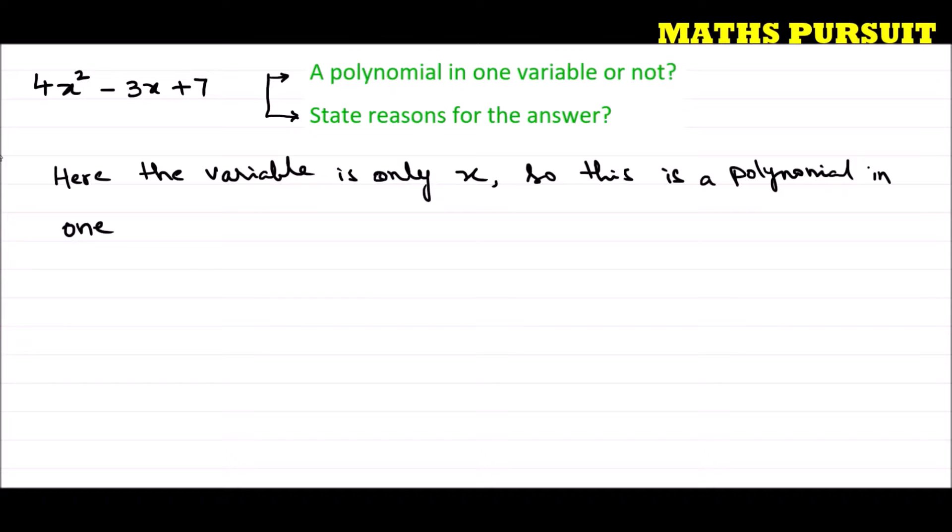In one variable. Now this answers the two things. We are on one hand telling that this is a polynomial in one variable and why? Because here the variable is only x. So this answers the two part of the question.